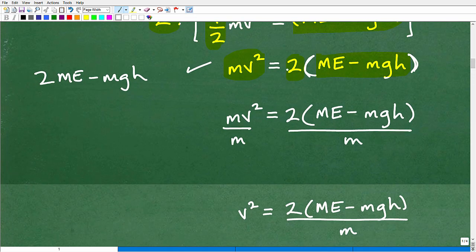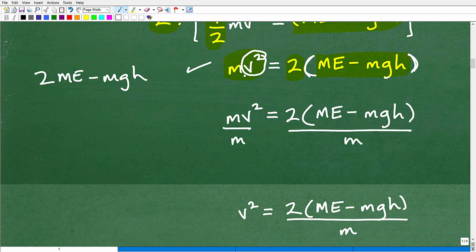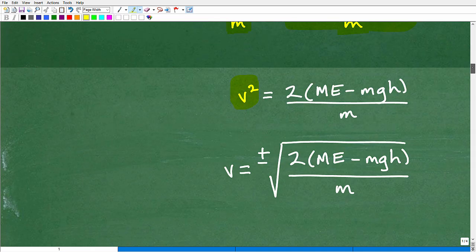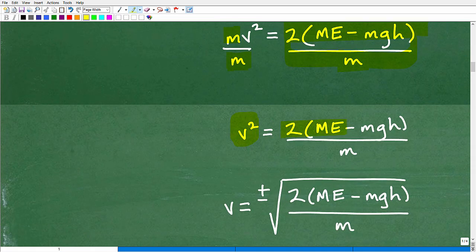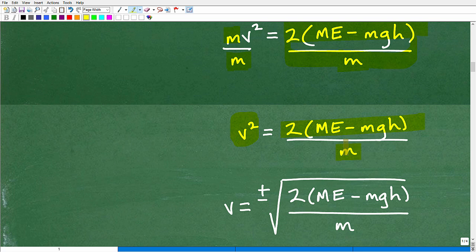All right, so we have M times v squared is equal to this. So let's get to this v squared by itself. So the way to do that, I need to get rid of this M. So the way to get rid of that M is to divide both sides of the equation by M. So I have Mv squared. I'm going to divide this side by M because M divided by M is going to be one. So it's going to be two times this expression here divided by M. When I simplify that, now I have this. I have v squared is equal to two times ME minus MGH divided by M.